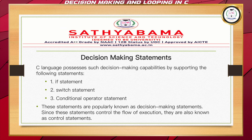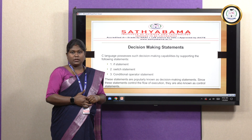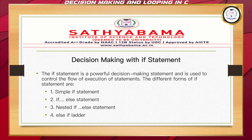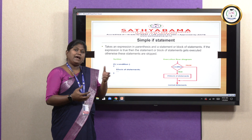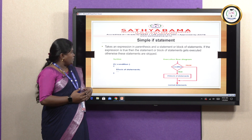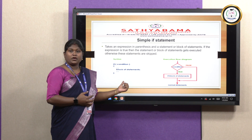The three decision-making statements are: one is the if statement, the next is the switch statement, and the other is conditional operators. Now we'll be dealing with decision-making using if statements. We have three types: simple if, if-else, and nested if. In simple if, we have a condition, and that condition will be checked. If the condition is true, we have a block to be executed. This is the syntax for simple if.